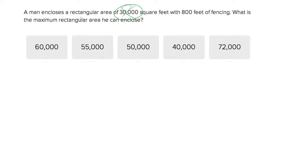It says a man encloses an area of 30,000 square feet. He uses 800 feet of fencing. Then the question they ask is, what is the maximum rectangular area he can enclose?